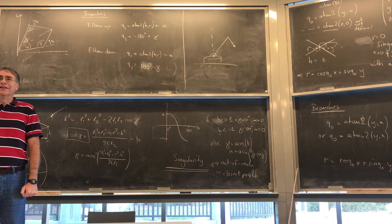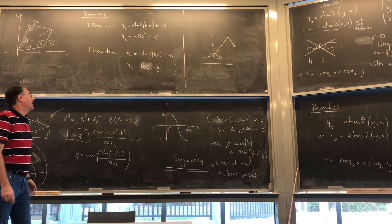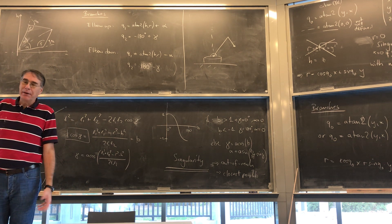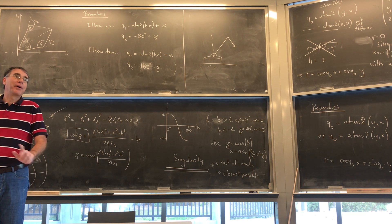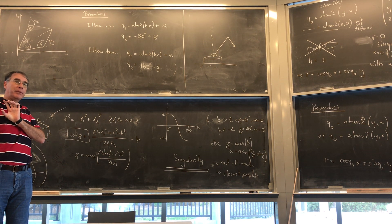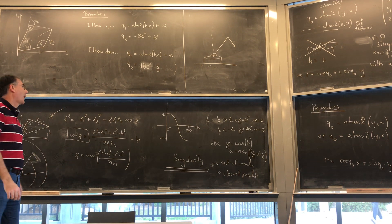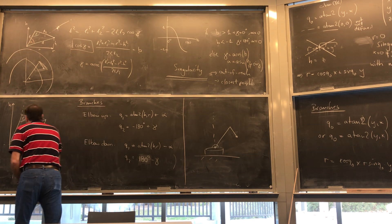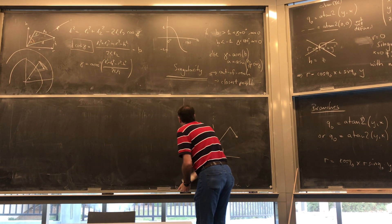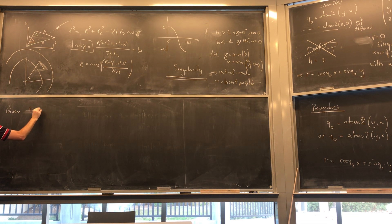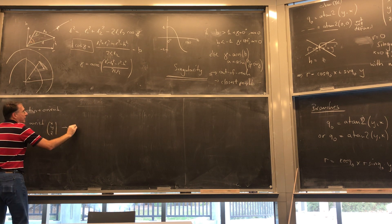Mathematically it's really not that nasty — it is one of those exercises of thinking about it. So one thing I should have put in the homework is: where are your singularities, how many do you have, where are they? For this mechanism there are two. You can take your arm, rotate it, and it'll look different — it'll be flipped — but it'll get to the same point.